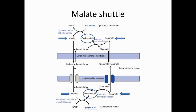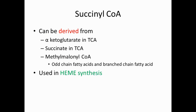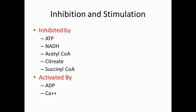You have to remember the key TCA cycle intermediates: citrate is used in fatty acid synthesis, alpha-ketoglutarate is used in amino acid synthesis, and oxaloacetate is used in glucose and amino acid synthesis. Succinyl-CoA comes not only from the TCA cycle but also from methylmalonyl-CoA derived from odd-chain fatty acids and branched-chain fatty acids, and it is used in heme synthesis.